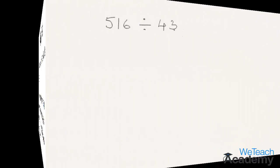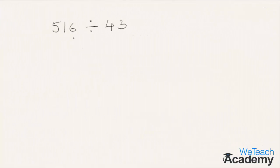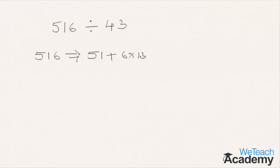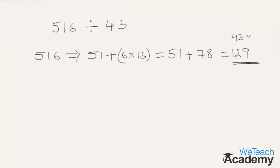Let me explain this concept with a few examples. The first example is 516. According to the rule, add 13 times the last digit to the remaining number, which gives us 51 plus 6 times 13, which is 51 plus 78, giving us a result of 129.